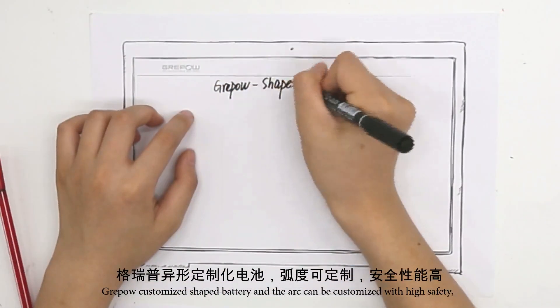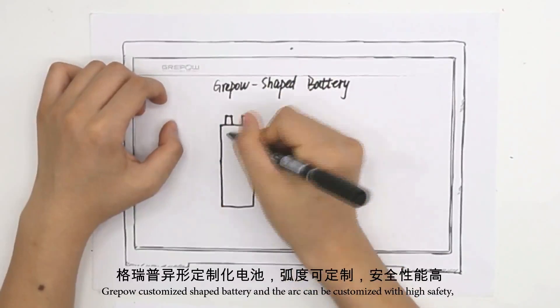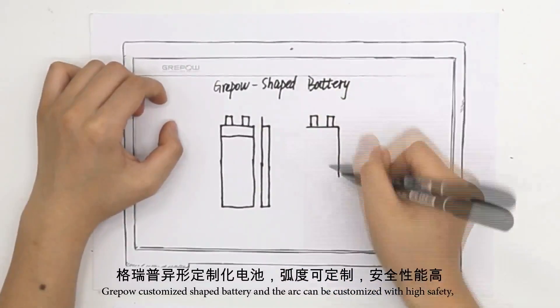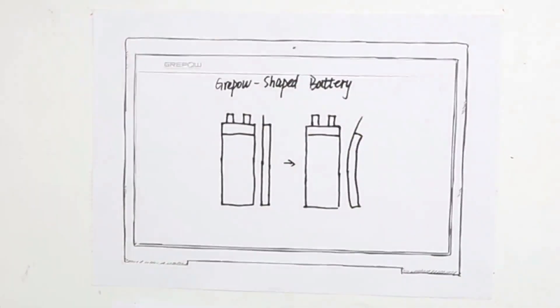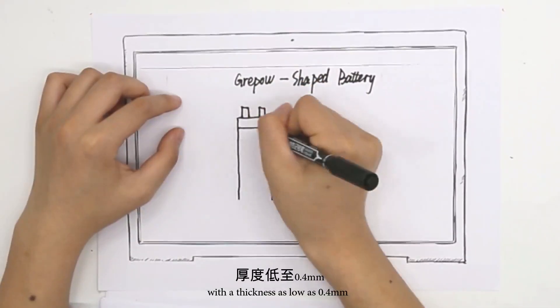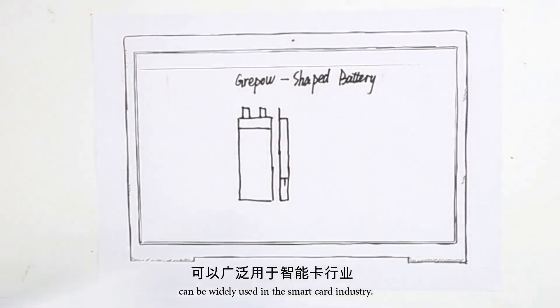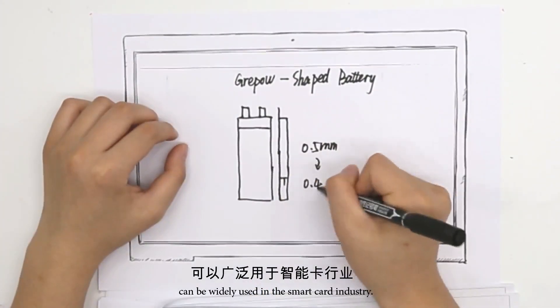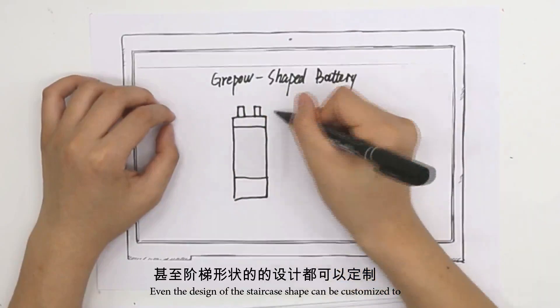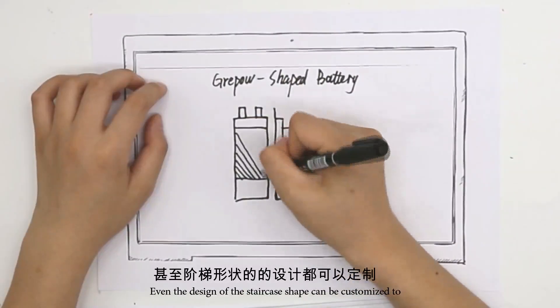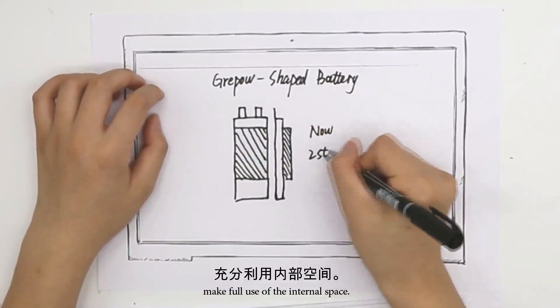Griebel customizes shaped batteries and the R can be customized with high safety not damaging the electrodes. The ultra-thin battery with a thickness as low as 0.4 mm can be widely used in the smartwatch industry. Even the design of the staircase shape can be customized to make full use of the internal space.